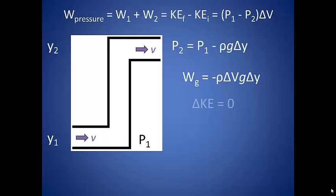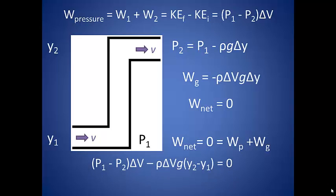So here's the deal. The velocity, remember, does not change because the cross-sectional area of the channel does not change. This means that the network done on the system does not change either. So the work done by the pressure plus the work done by the gravity equals zero. This is a big deal because we can combine those terms and rewrite our equation in one more form.